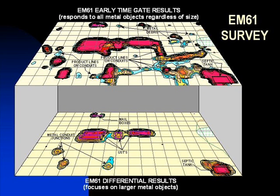This slide shows the results of an EM61 metal detection survey. The early time gate response shown in the top plot is the most sensitive component and detects all metal objects regardless of size. The early time gate is used to locate buried conduits in areas containing miscellaneous debris. The differential response shown in the bottom plot identifies areas containing large metal objects such as drums and tanks, and ignores the small miscellaneous metal debris.